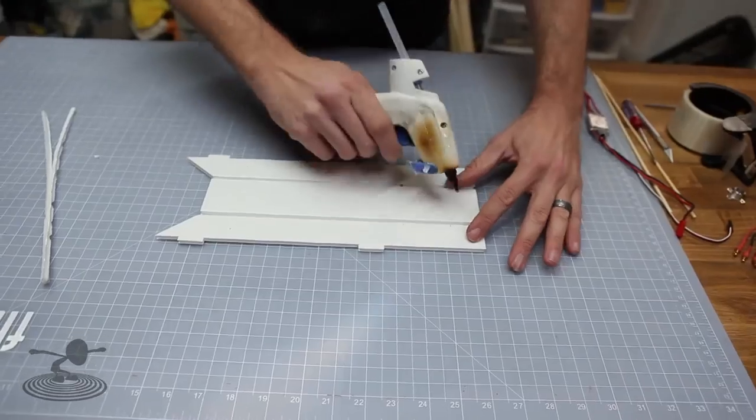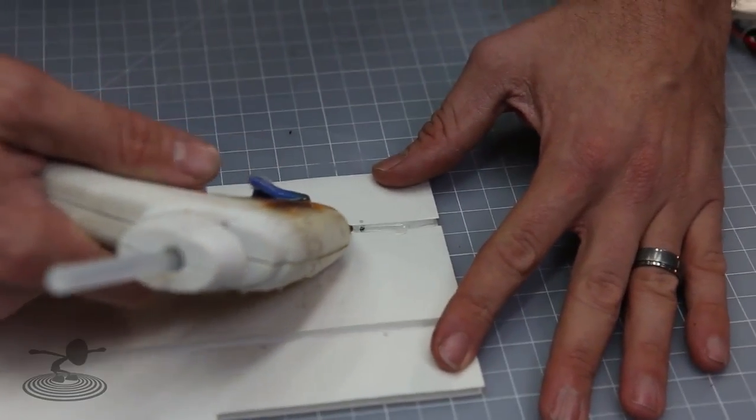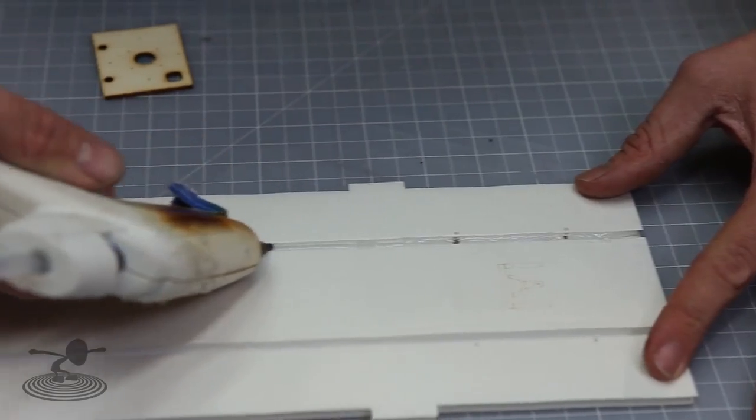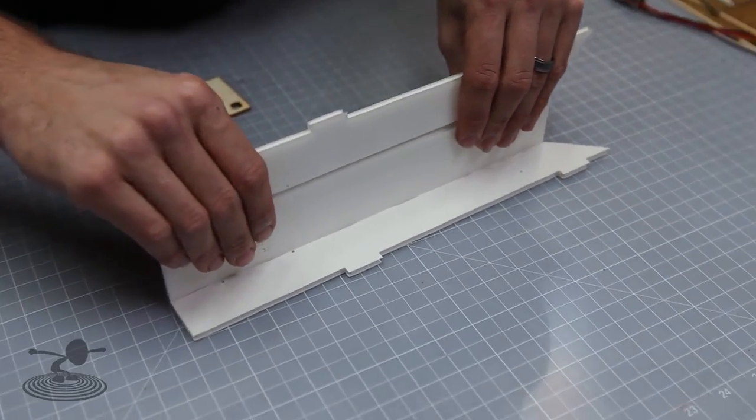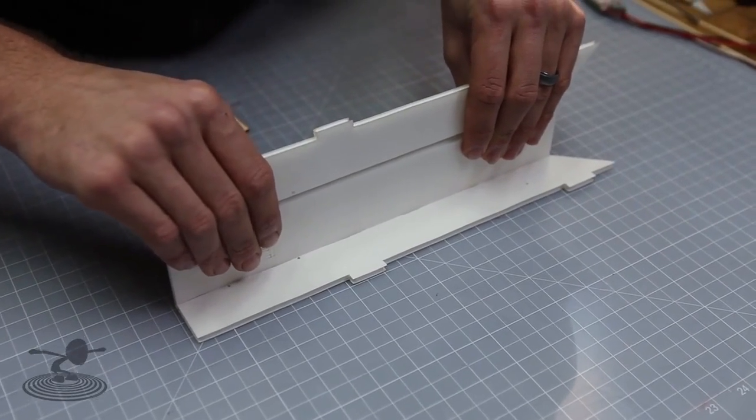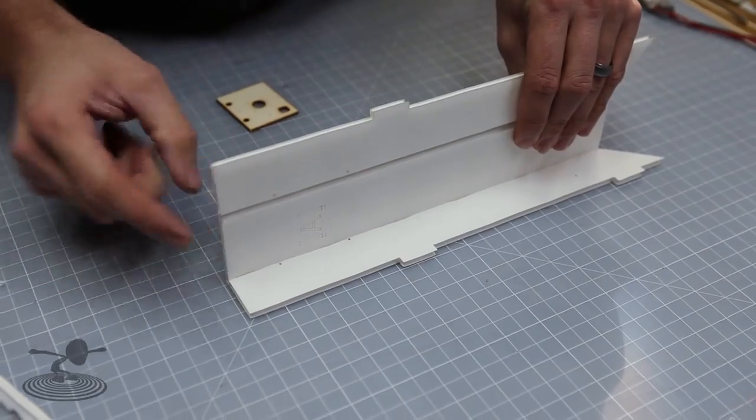Our next step is to take our hot glue gun and start roughly about a half of an inch in, and put a nice bead of hot glue right down the side here. Squeeze over the edge just ever so much, giving you a nice firm glue joint.